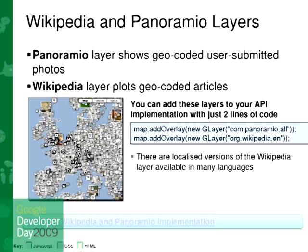We also added the Wikipedia and Panoramio layers — layers that you can use that will populate the full map with pictures from Panoramio or articles from Wikipedia. This approach — which is not populating the map with placemarks but actually providing customized tiles — will be more and more available in the API.